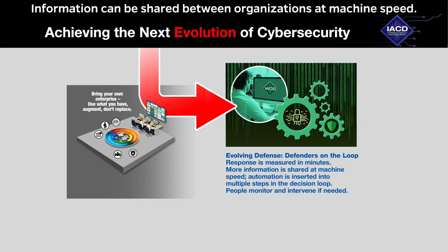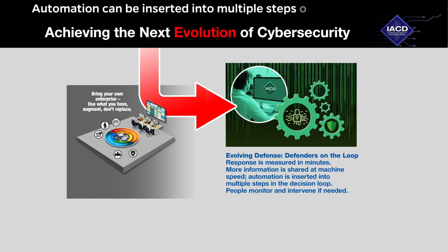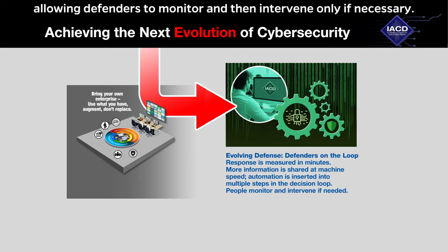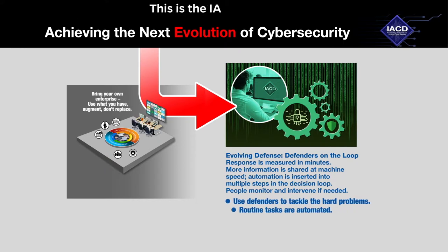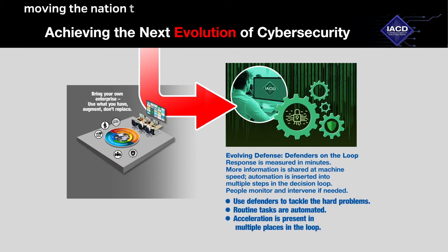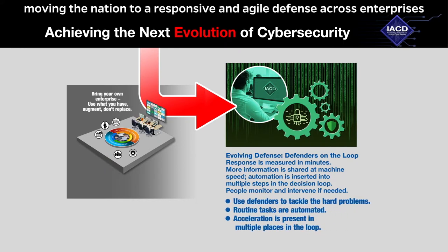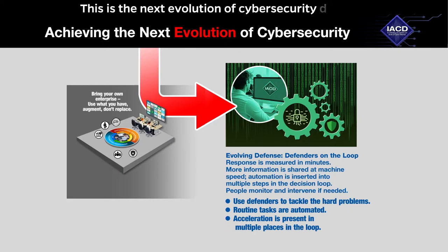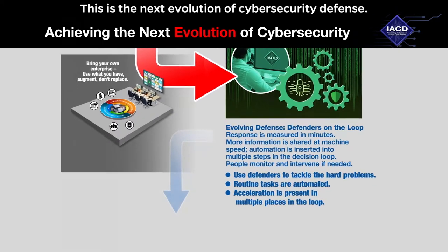Information can be shared between organizations at machine speed. Automation can be inserted into multiple steps of the decision loop, allowing defenders to monitor and then intervene only if necessary. This is the IACD difference — moving the nation to a responsive and agile defense across enterprises by shaping the landscape for automation and orchestration. This is the next evolution of cybersecurity defense.